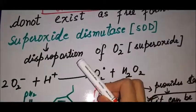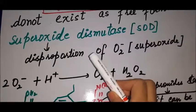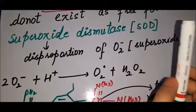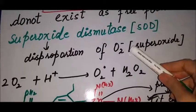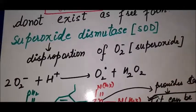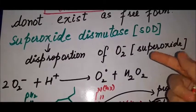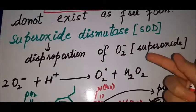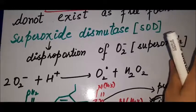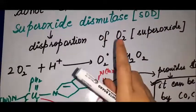What does SOD do? It performs the disproportionation of O2 negative, which we call superoxide. This is a very important point because many people ask whether a particular bioinorganic compound is made by superoxide or peroxide. Remember: superoxide is converted by SOD via the disproportionation reaction.